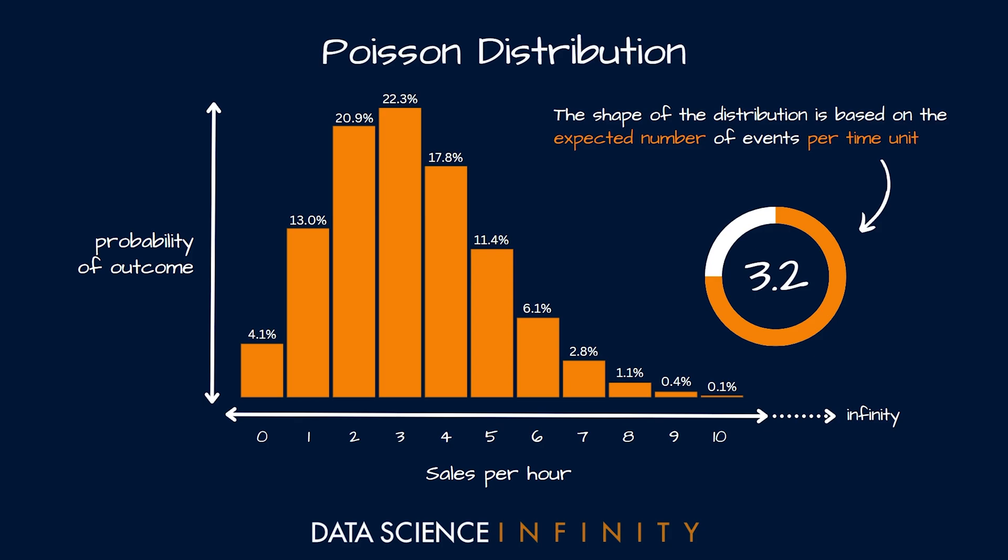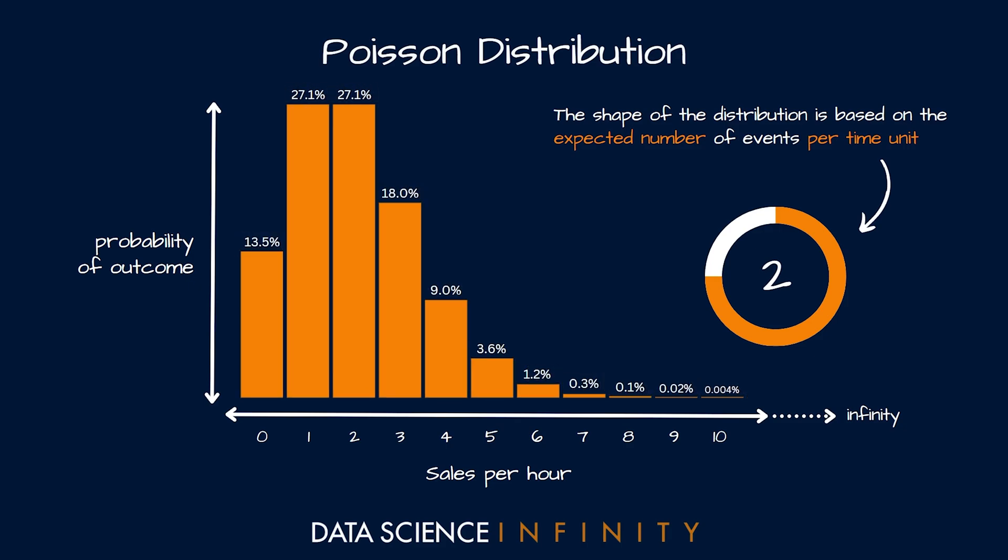Now with this all in mind, the thing that really drives the Poisson distribution is our expected number of sales per hour. Currently, as you can see, this has a value of 3.2. If we were to change that value—so let's say based on historical data we actually only expected two sales per hour—our distribution would shift accordingly. So like I say, that expected number of events is really what underpins this entire distribution.